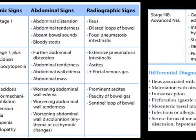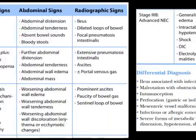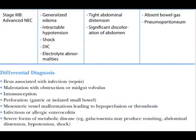Stage 3b is the most severe stage, presenting with generalized edema, intractable hypotension, shock, DIC, and electrolyte abnormalities. On examination there is tight abdominal distension, significant discoloration of the abdomen, absent bowel sounds, and pneumoperitoneum on radiological findings.